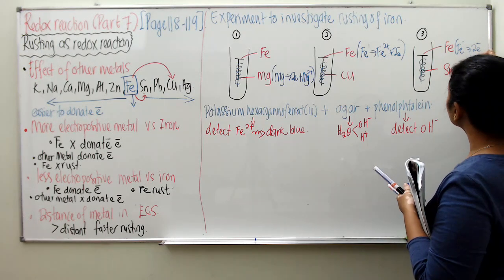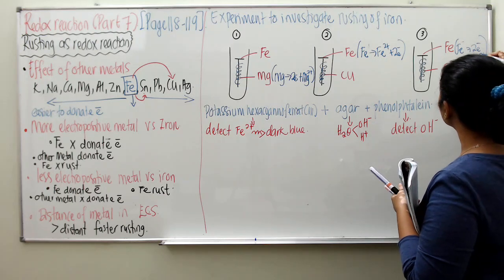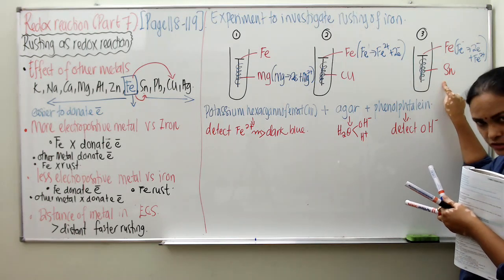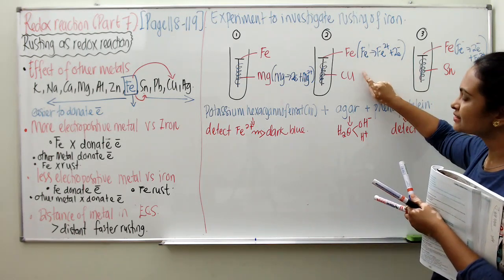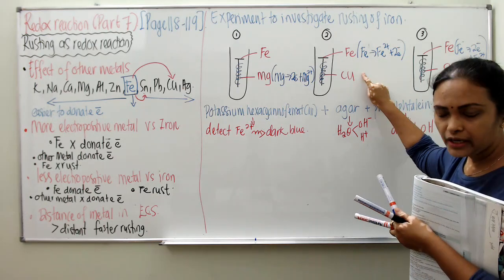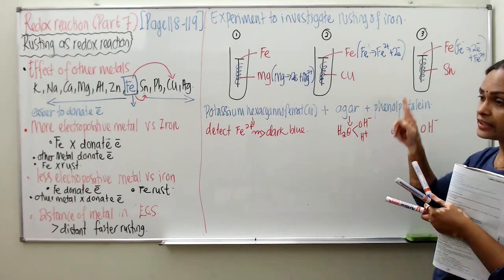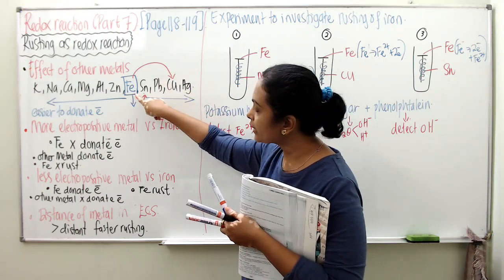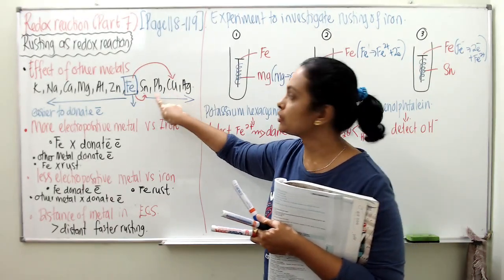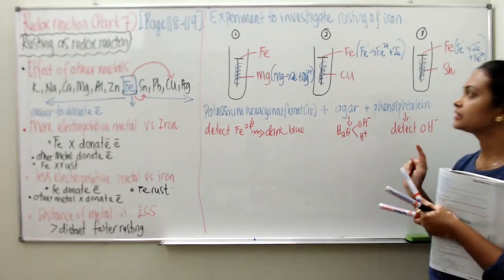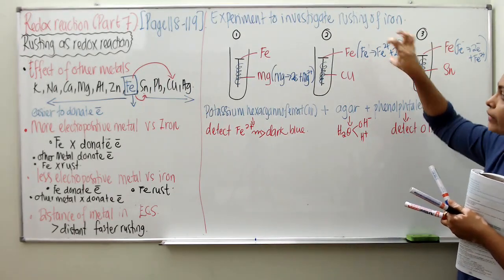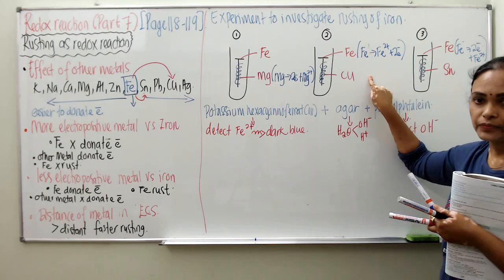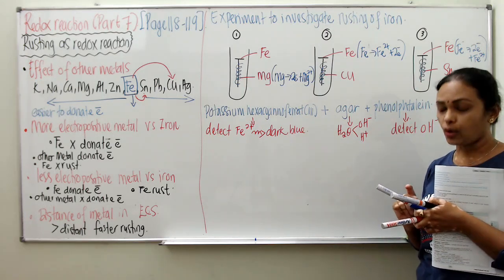When you compare the iron-copper and iron-stainless combinations, iron rusts faster in the iron-copper combination. This is because the distance between iron and copper in the ECS is greater compared to the distance between iron and stainless steel. That is why you can observe that dark blue spots are more intense in the iron-copper test tube.